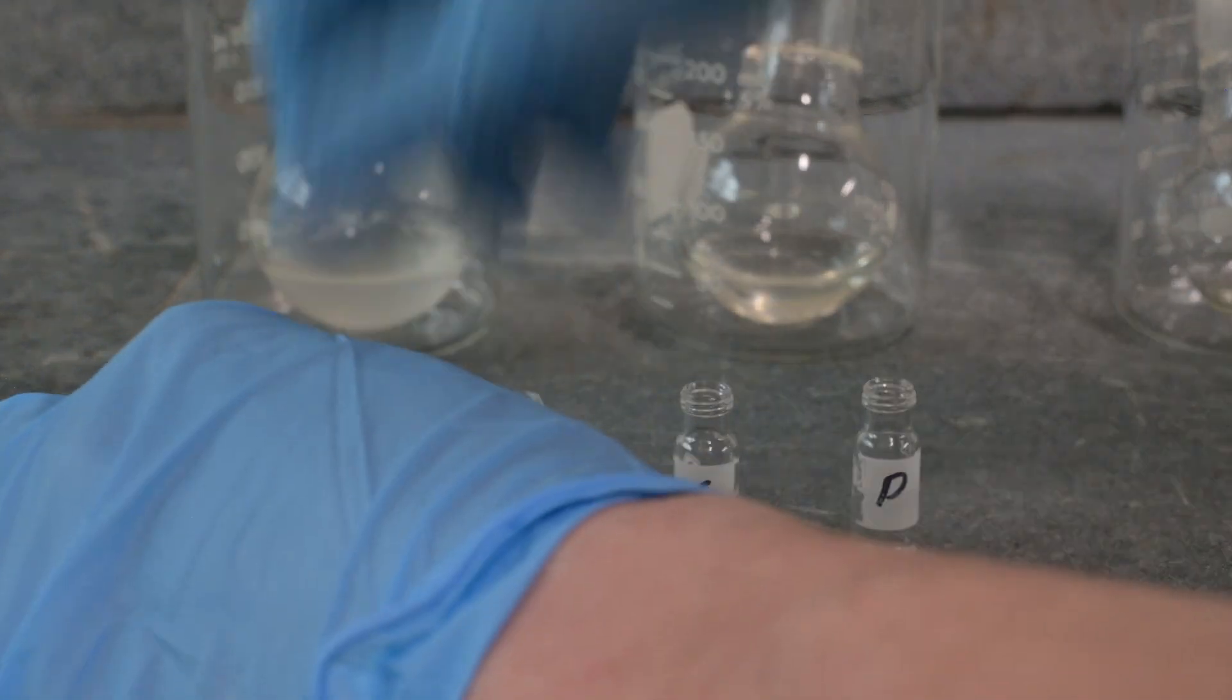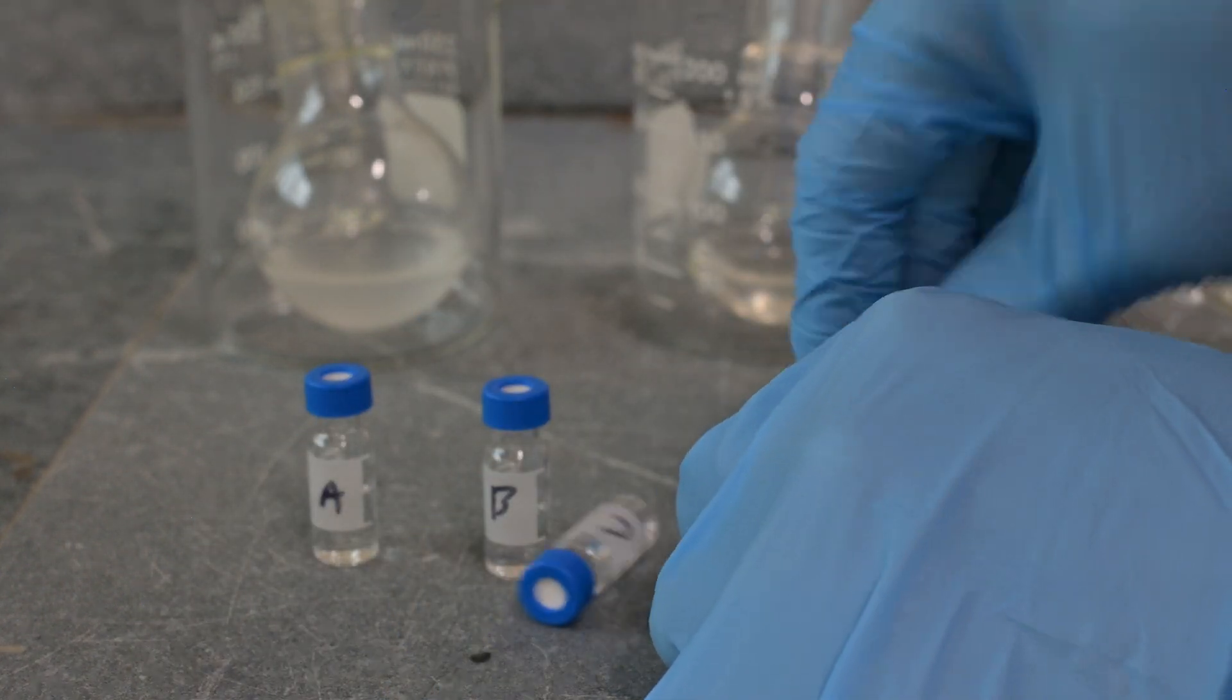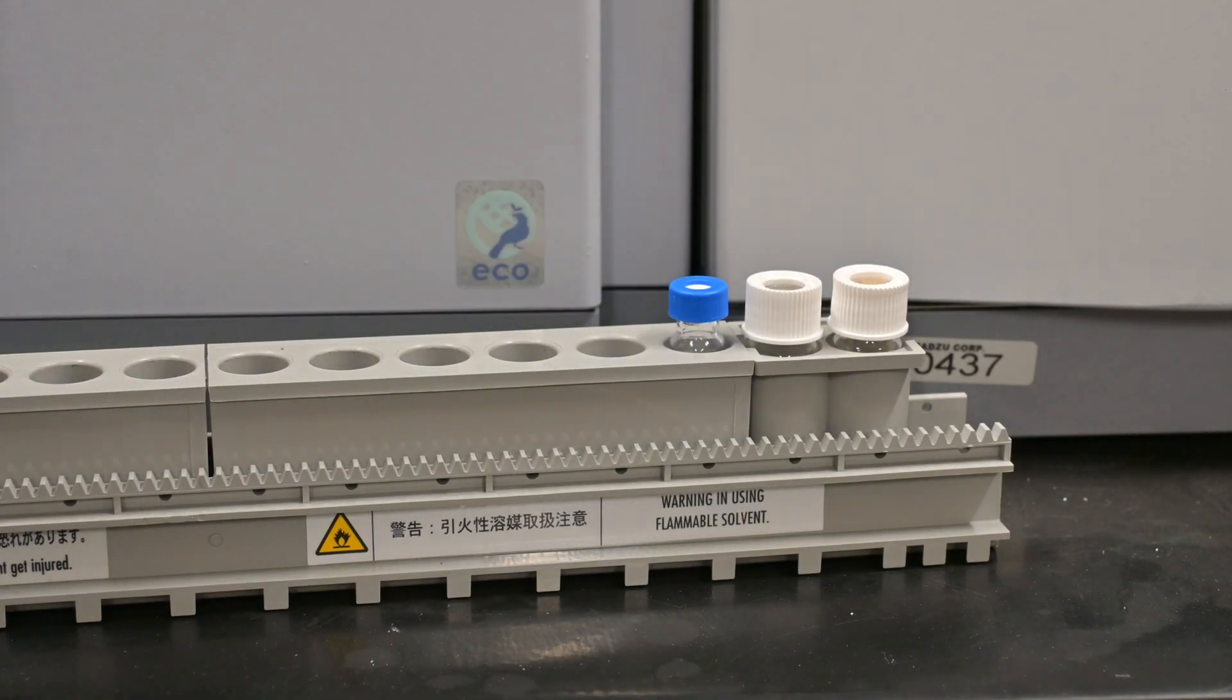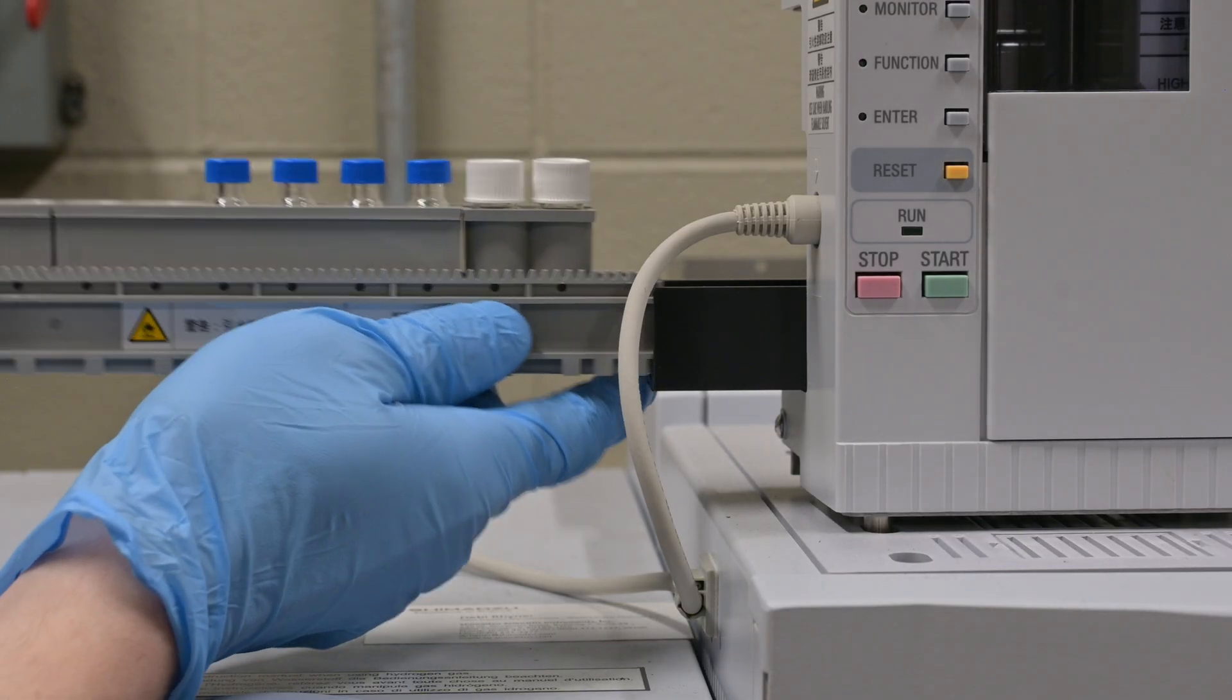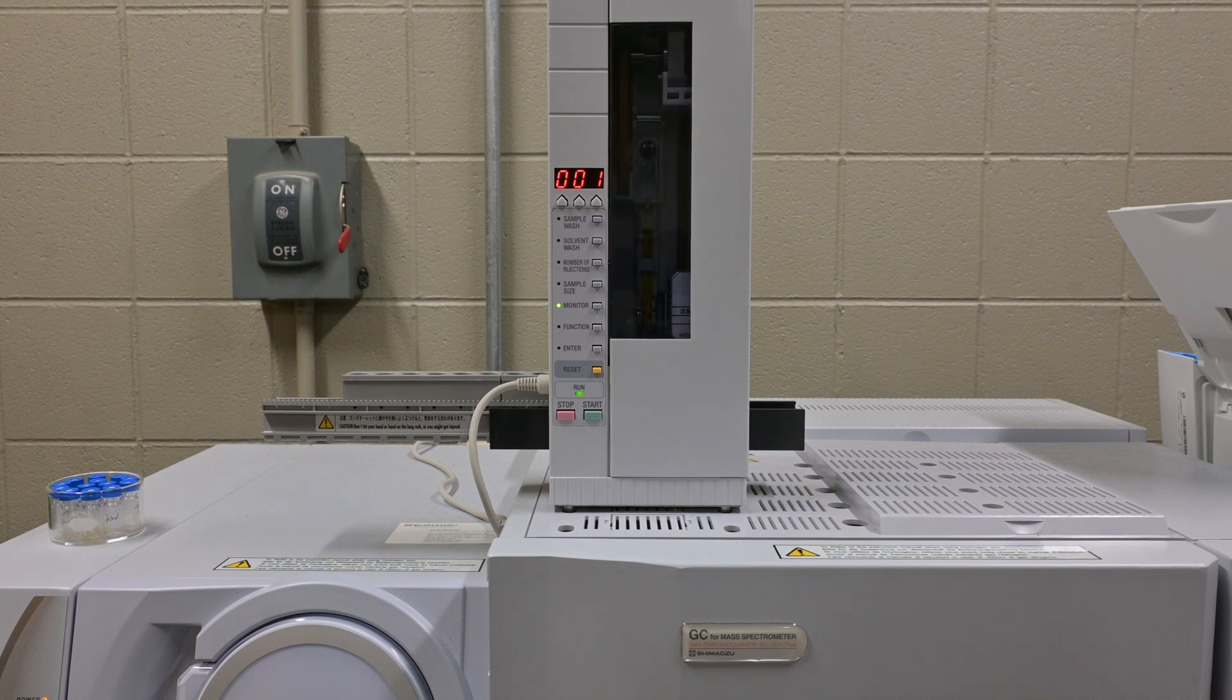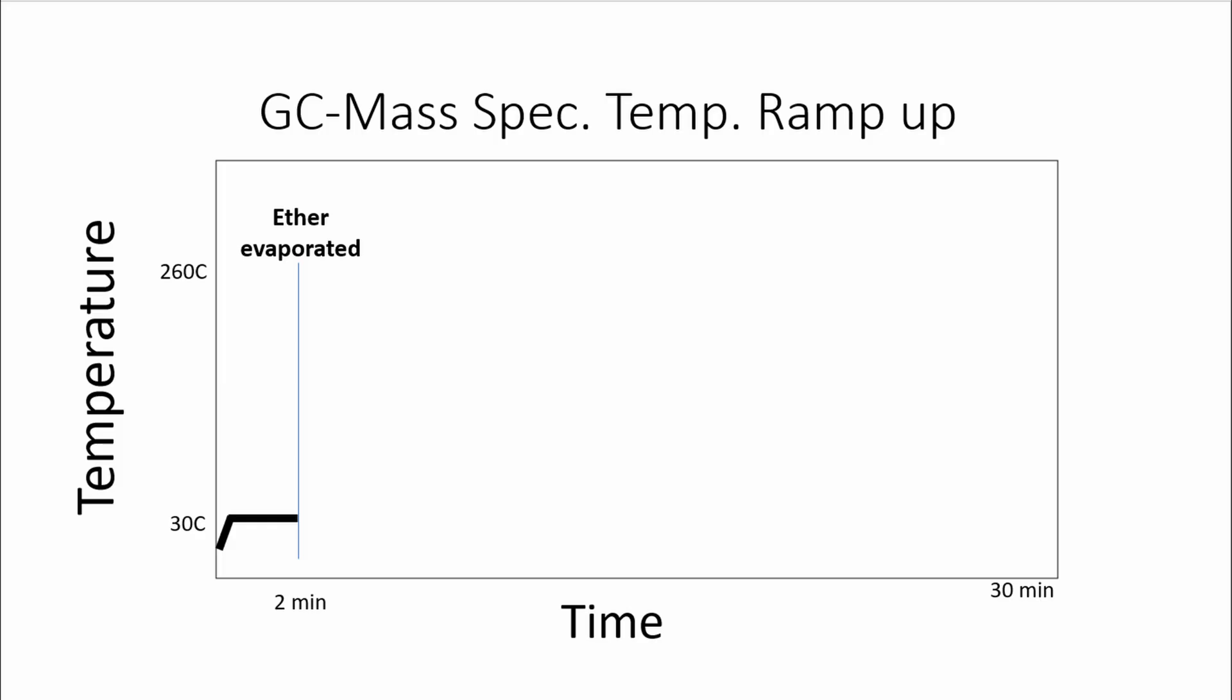The samples were then loaded into the GC mass spec. To avoid measuring the solvent, we set the initial temperature to 30 degrees Celsius and held it there for 2 minutes, allowing all the ether to evaporate before the mass spectrometer began collecting data.